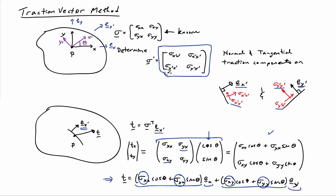One thing to remember is that sigma xy always equals sigma yx, but I'll write them as separate quantities just to keep track of where things are — they're always numerically the same. Likewise, sigma x prime y prime always equals sigma y prime x prime. Now let's see what happens when we transform the traction vector and extract information from that.